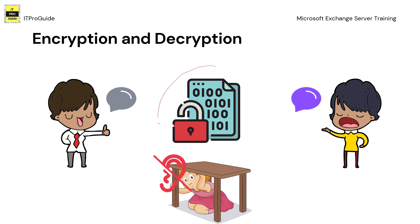Only the destination — only the recipient — can decrypt it. So you use methods to encrypt and decrypt using keys. If anyone in between gets this information, they cannot read the data because it is totally encrypted — it is in an unreadable format, known as cipher text.